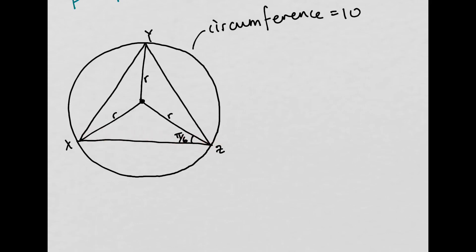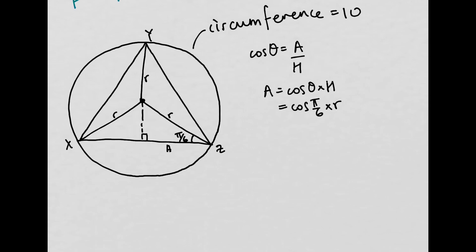If we want to know the side lengths, a right-angled triangle is usually quite useful. So if we split this up into two right-angled triangles, we can work out the length of one half of the edge. We want an edge adjacent to the angle, and we know the angle and the hypotenuse, so we use cosine: cos θ = adjacent/hypotenuse. So the adjacent side a = cos(π/6) × r = (√3/2)r.